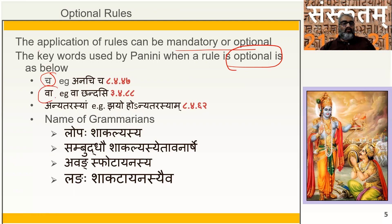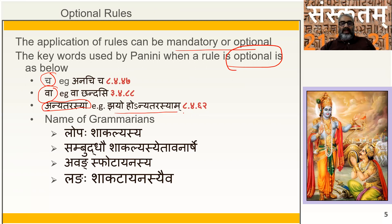The second keyword indicating an optional rule is 'va.' The word va itself is optional. One example is the Sutra 'va chandasi,' which is 3rd Adhyaya, 4th Pada, 88th Sloka. The third keyword is 'anyatarasyam' — when this word is used in a Sutra, that rule is optional. The example is 'jayohohanyatarasyam' — 8462.